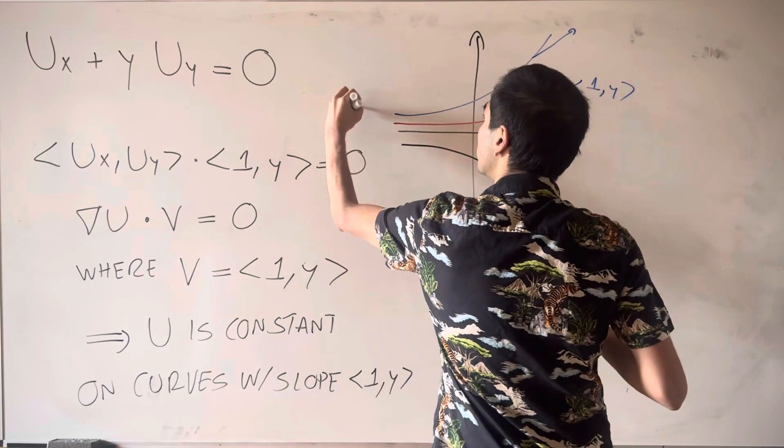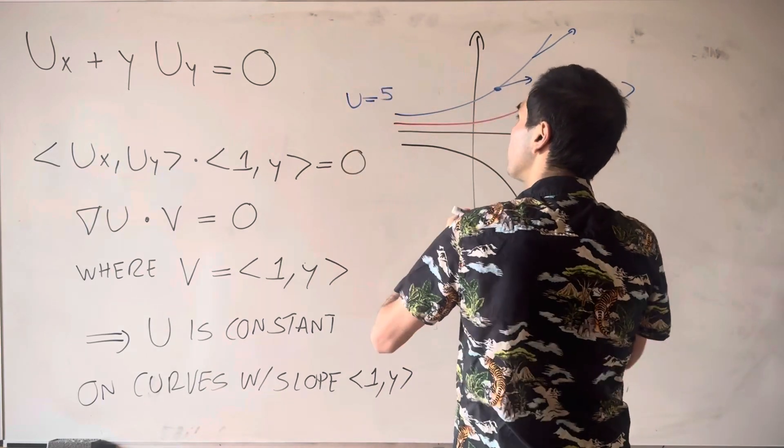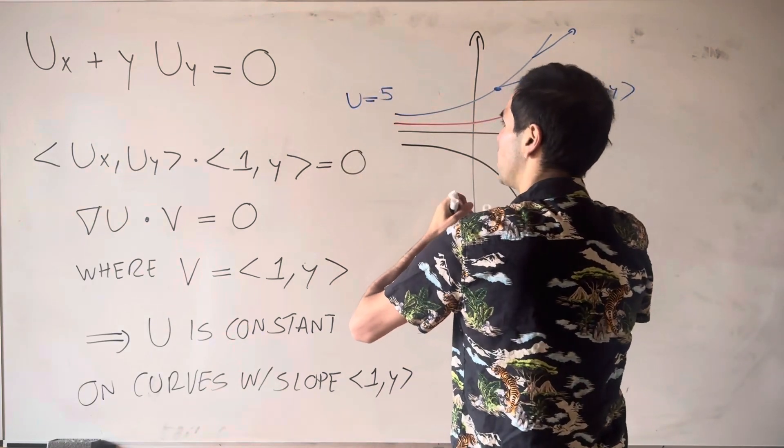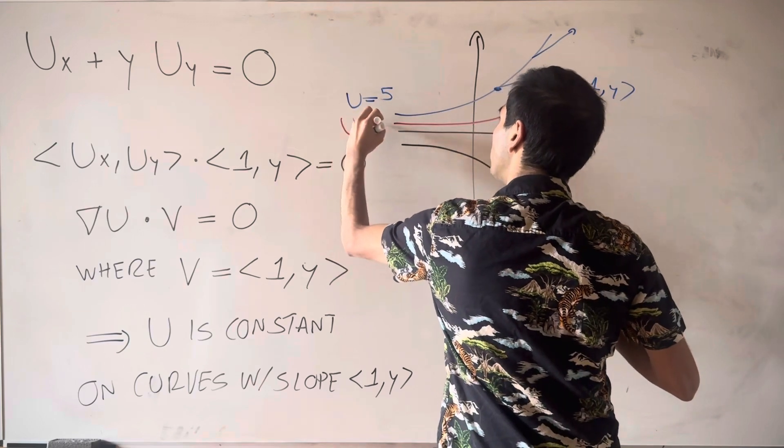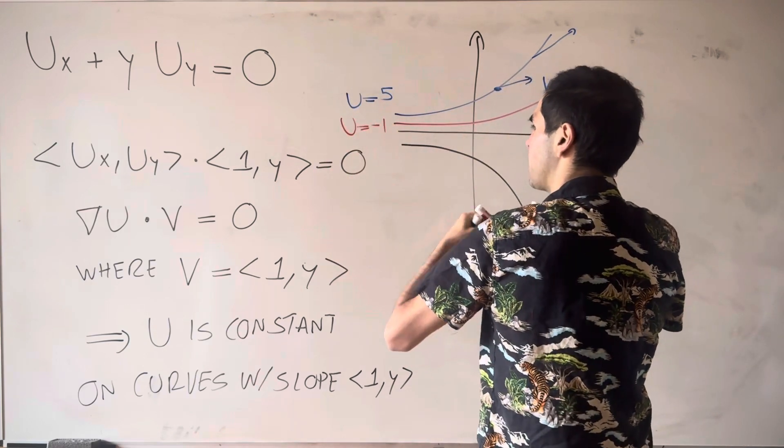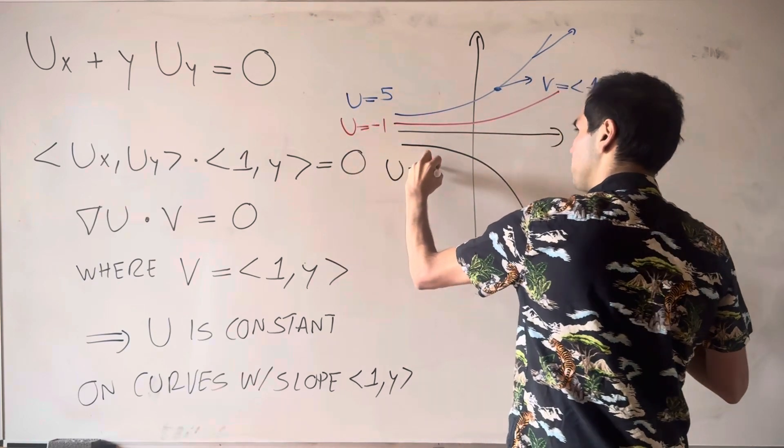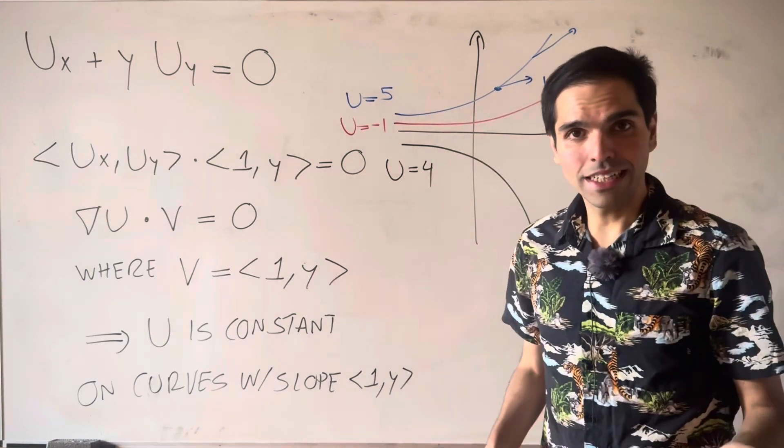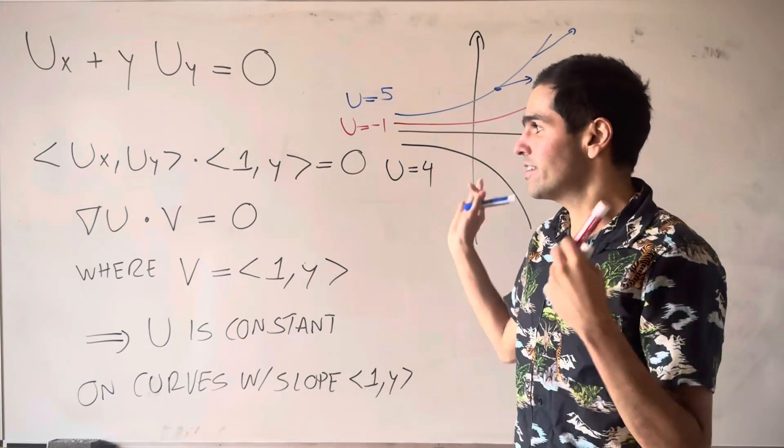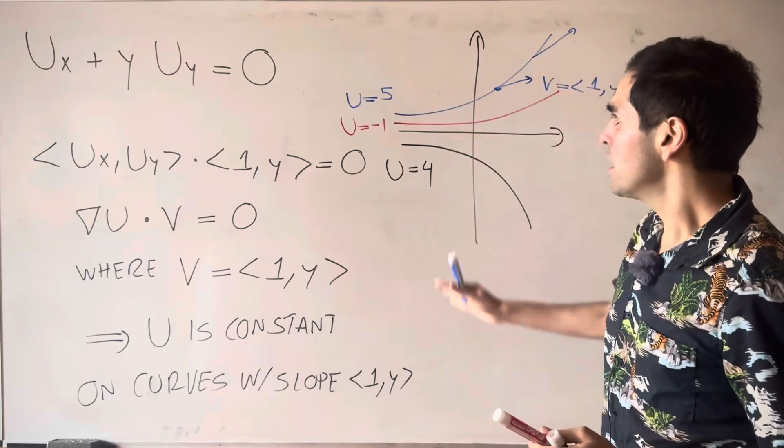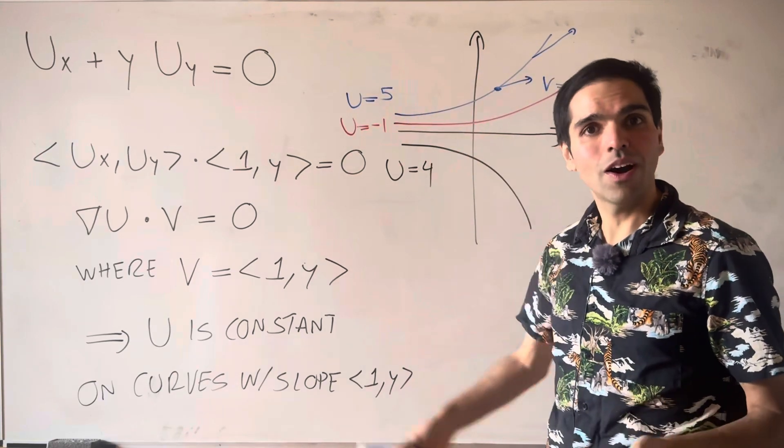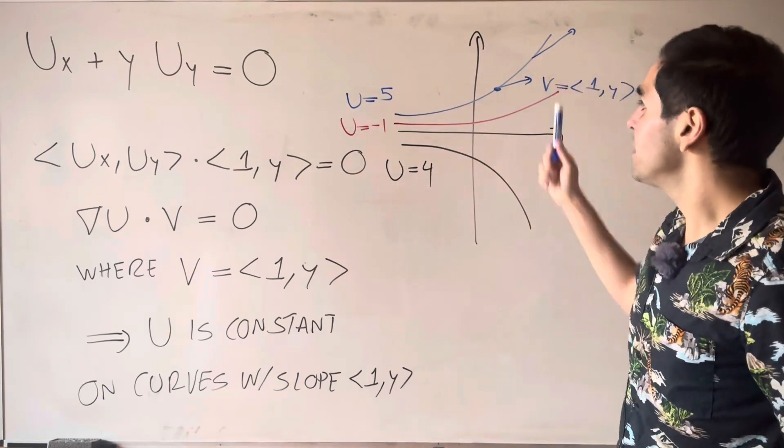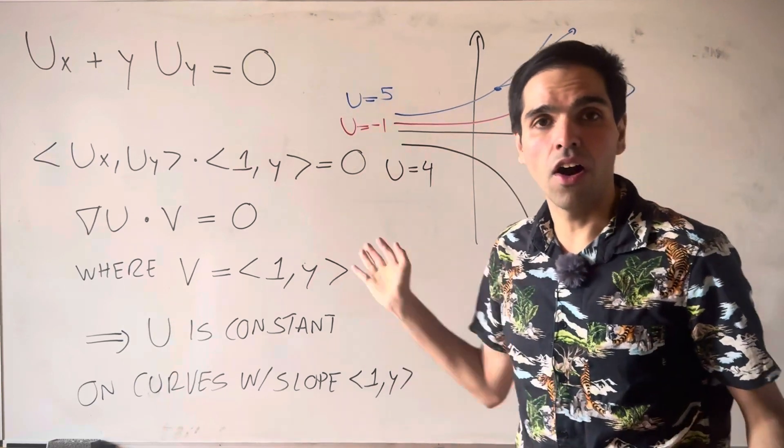And u is constant on each curve. So for instance, here you could assign the value of 5, or here you could assign the value of minus 1, or here you can assign the value of 4. Once again, the main difference between this case and the previous one is that previously, u was constant on straight lines, but in this case, u is constant on those curves.